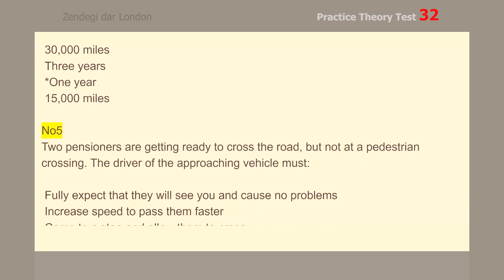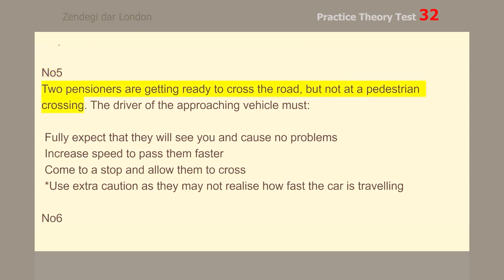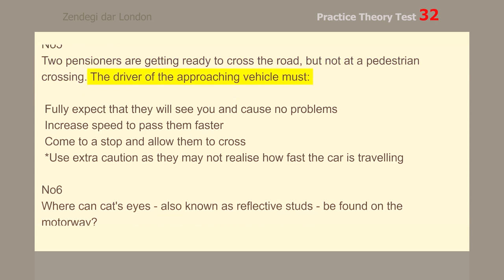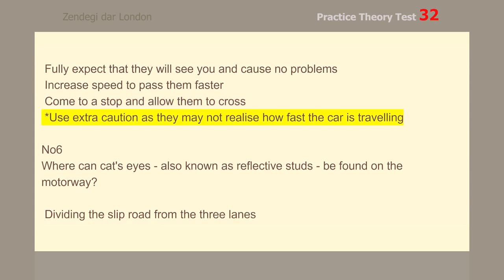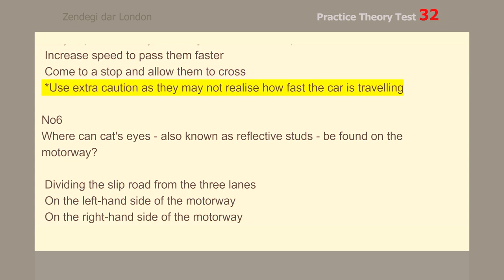Number 5. Two pensioners are getting ready to cross the road, but not at a pedestrian crossing. The driver of the approaching vehicle must use extra caution as they may not realize how fast the car is traveling.